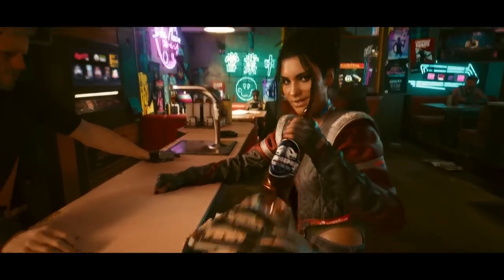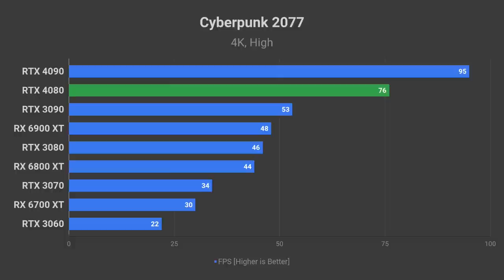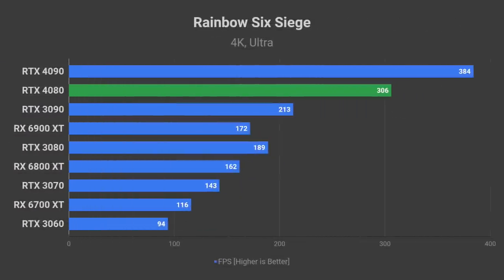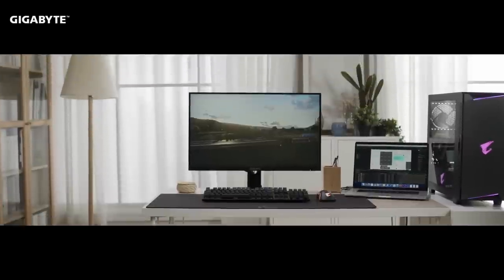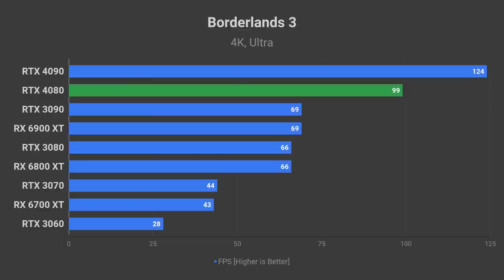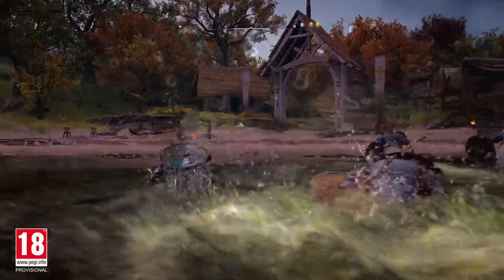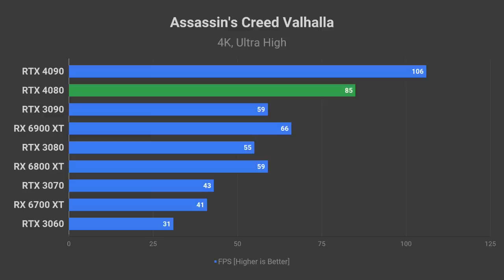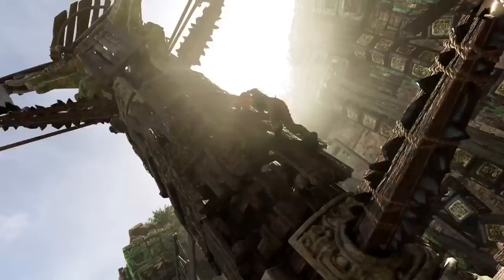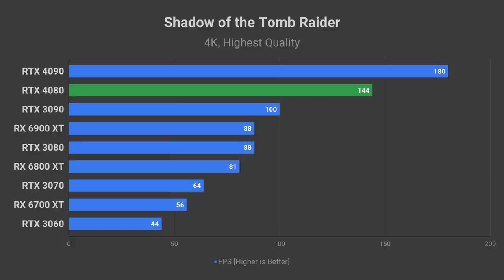Cyberpunk 2077 is known for destroying FPS on any GPU, but you should be able to run it above 70 FPS on the high preset with an RTX 4080, finally crossing that 60 FPS average for a smoother experience. In contrast, Rainbow Six Siege is a fairly easy game to run — 4K ultra settings, over 300 FPS is possible, making 4K 240Hz monitors more welcome than ever. Expect close to 100 FPS in Borderlands 3 on the ultra preset. Assassin's Creed Valhalla tends to favor AMD cards, but the RTX 4080 should still allow you to pillage England in 4K ultra-high quality at 85 FPS average.